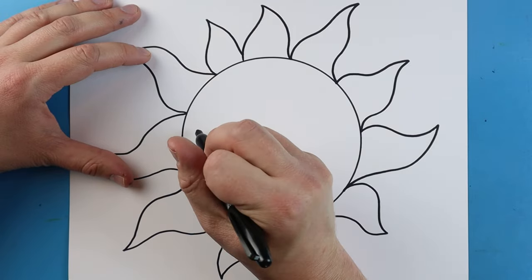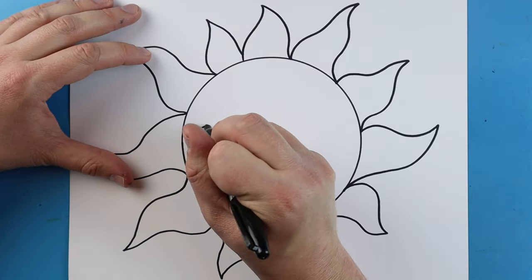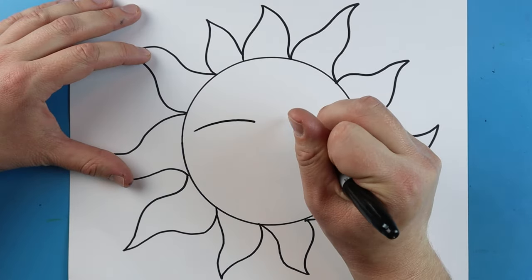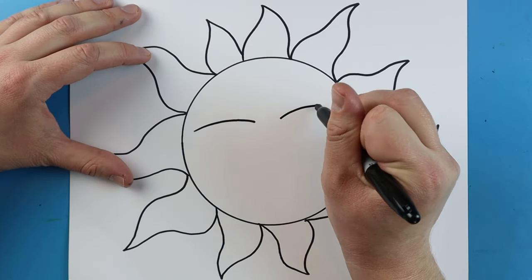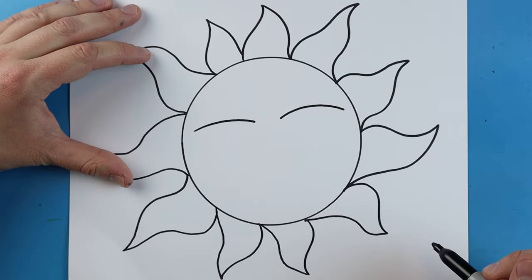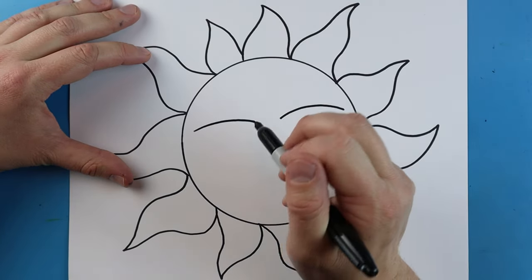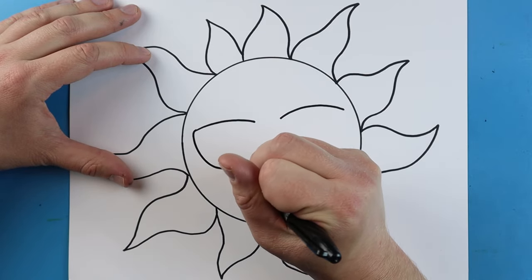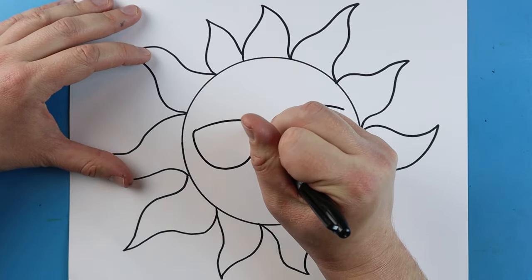So I'm going to start right here. And I'm just going to begin by making a little line that's going to curve up and down. I'm going to leave some space and do the same thing here. Starting here, I'm going to draw a line that's going to go down and come back up like a big smiley face.